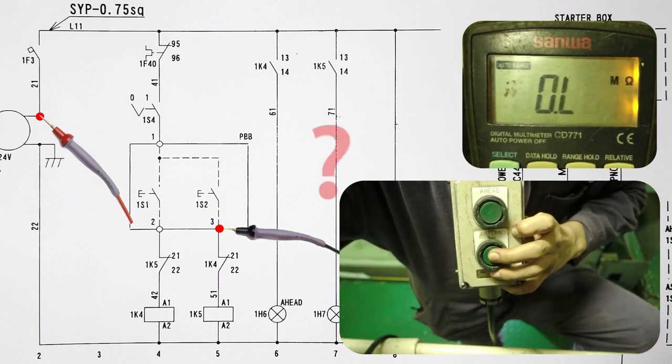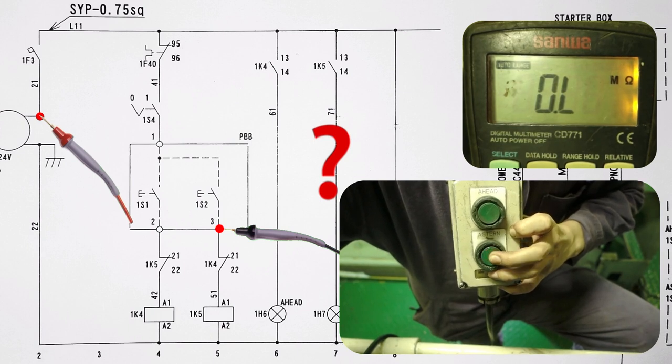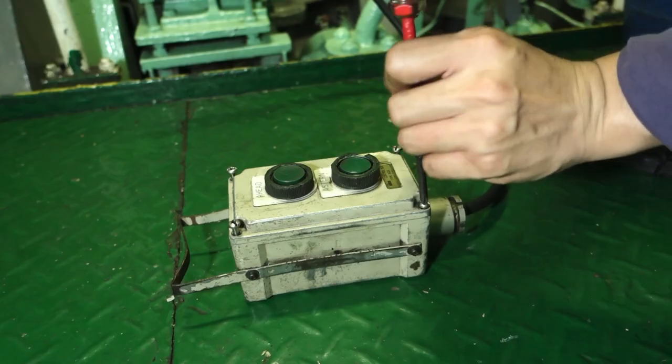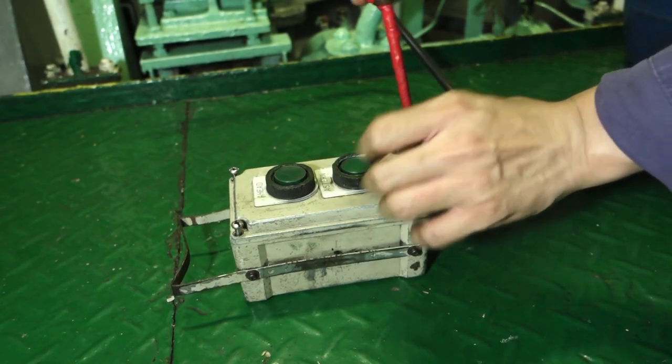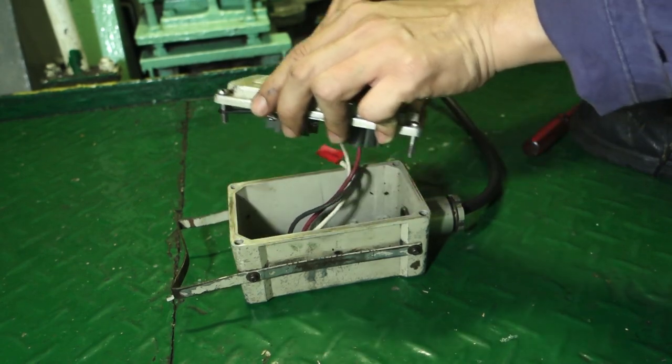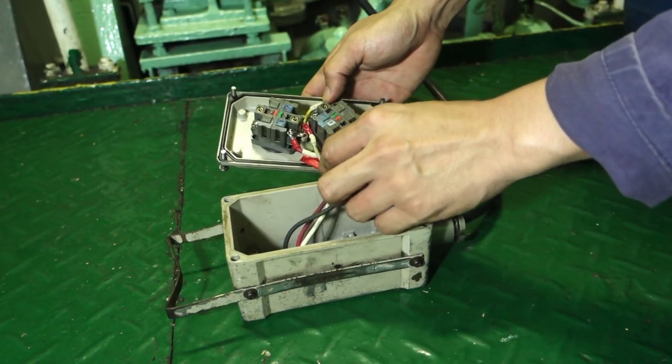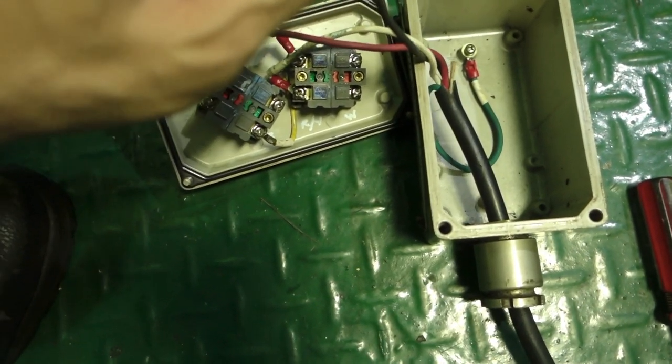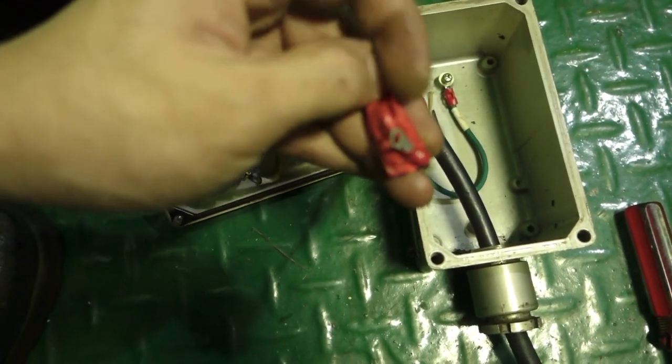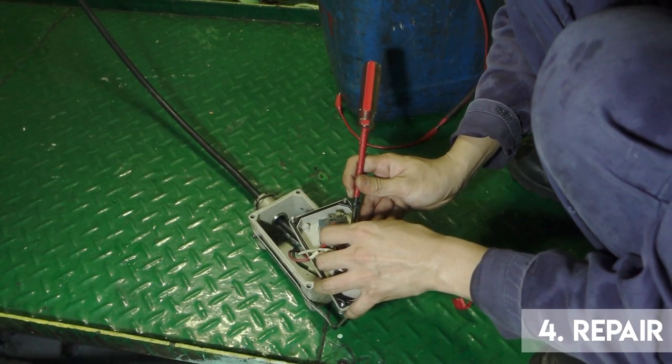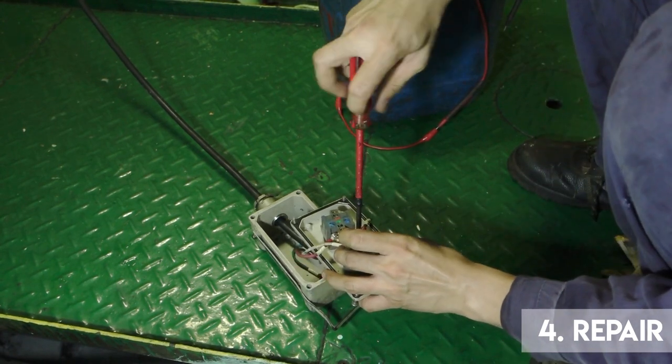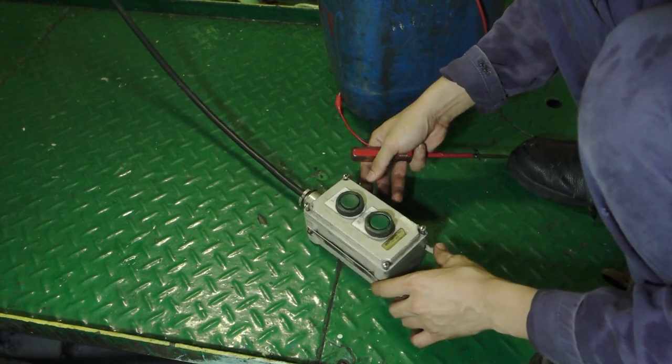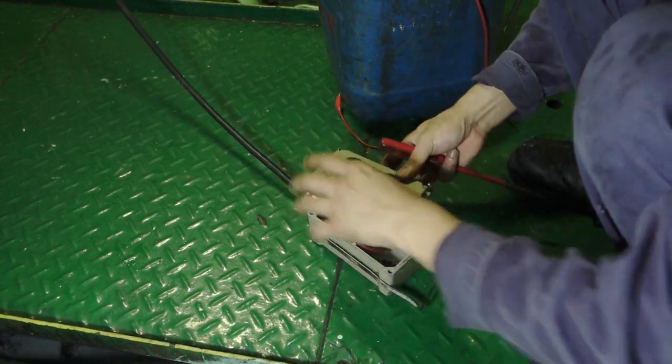At this point, I don't get a reading even though I press the push button. I suspect that there's a problem at the remote control. Then, I opt to check the inside of the remote control and found out a disconnected wire. I put the wire back to its original junction and to test later.